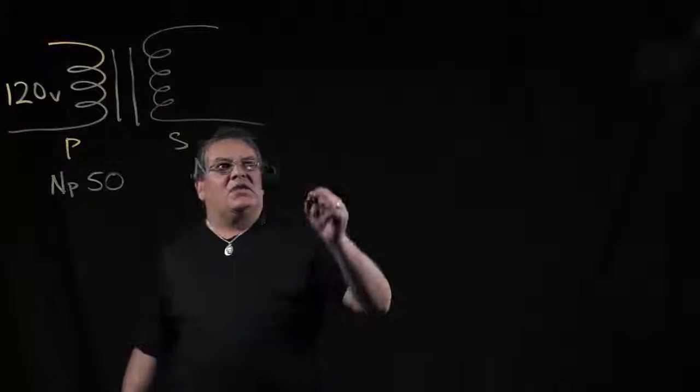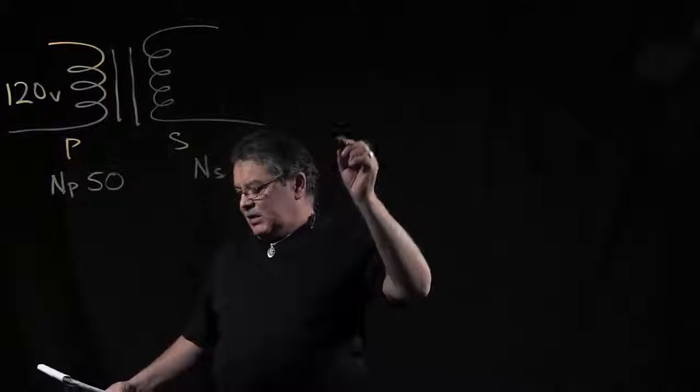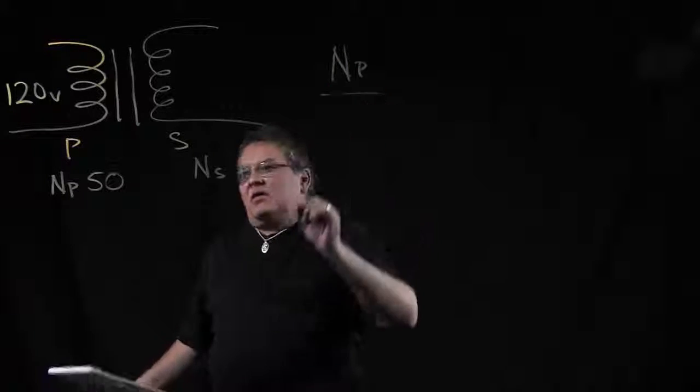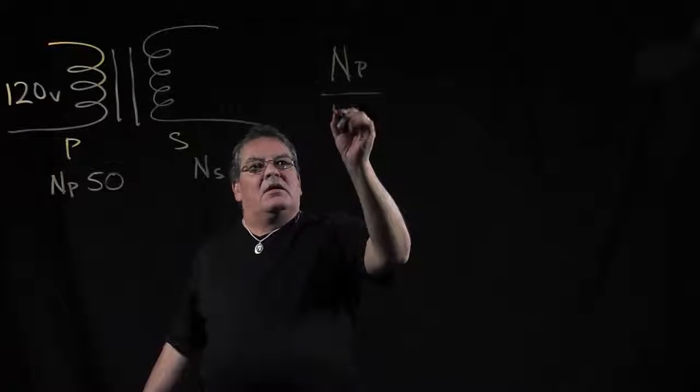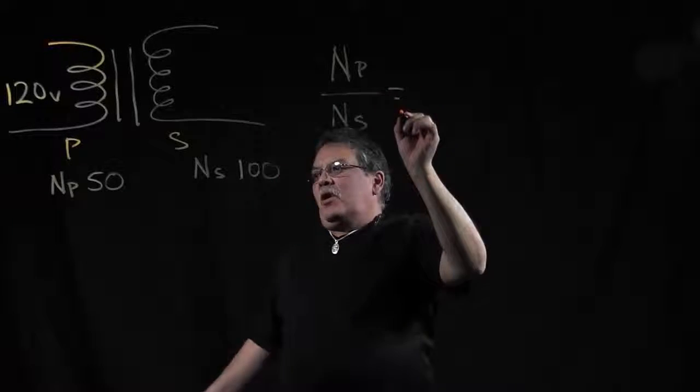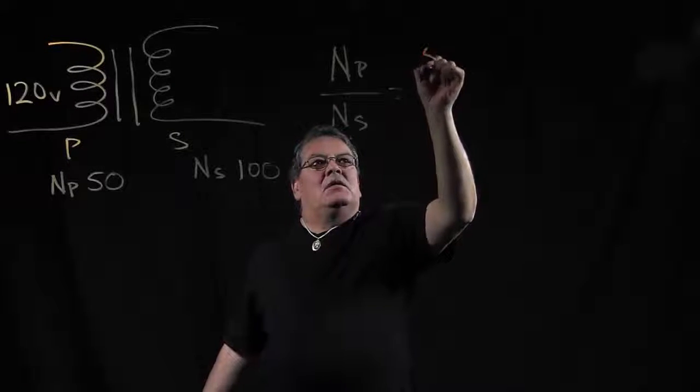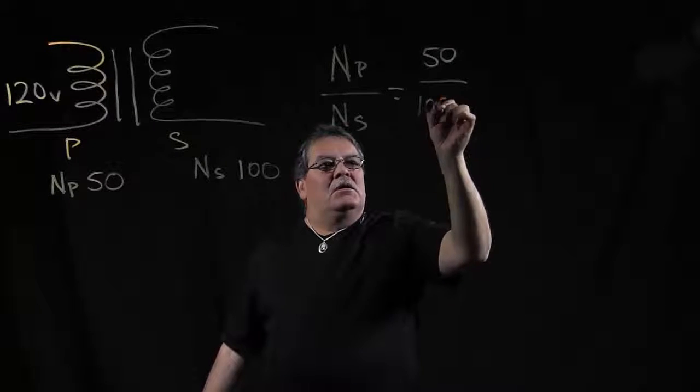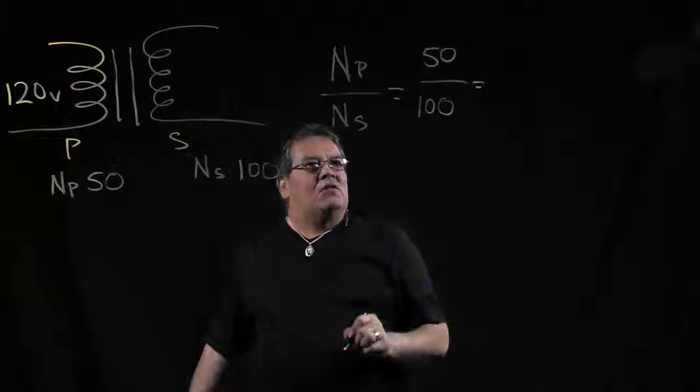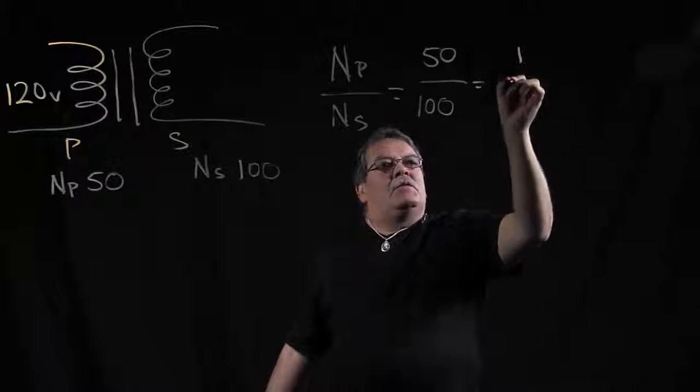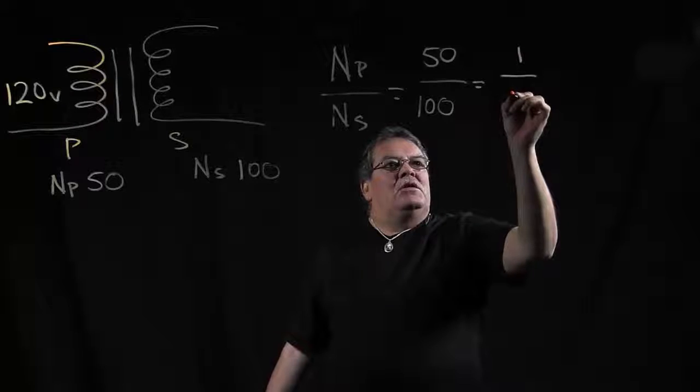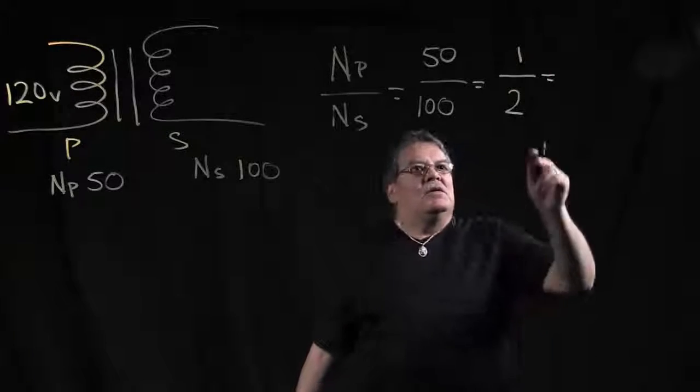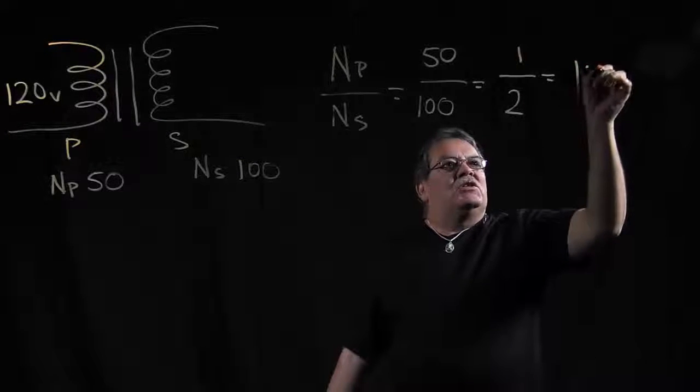Okay, so the formula to get your turns ratio is basically number of turns in your primary divided by the number of turns in your secondary. So our primary turns is 50, our secondary turns is 100. This reduces down: 50 goes into 50 one time, 50 goes into 100 two times. So that is 1 to 2, so you turn that into a ratio, it's 1 to 2.